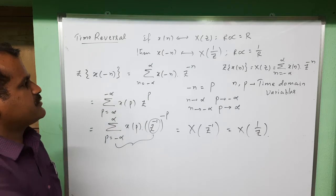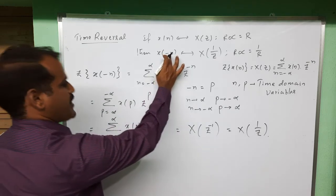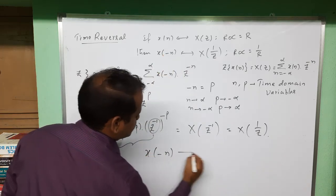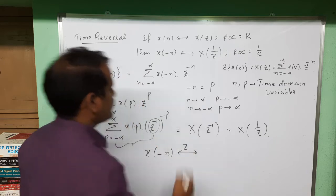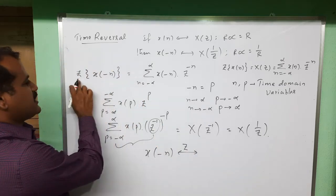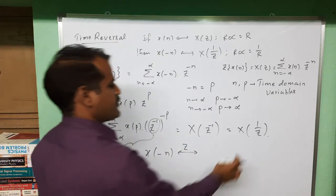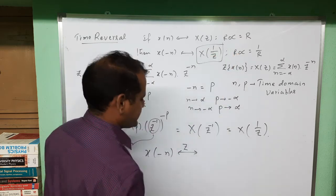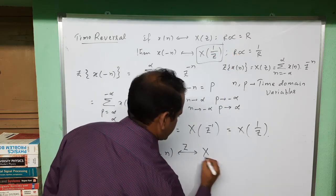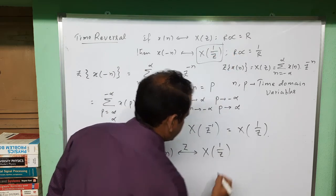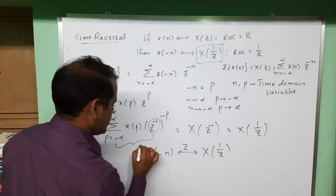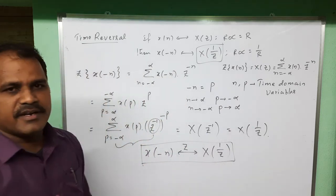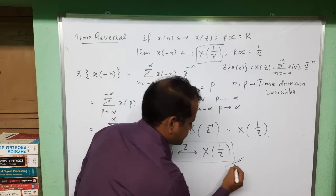So what we considered — the Z-transform of X(-n) — finally gives us the required right-hand side expression X(1/Z). This proves the time reversal property of the Z-transform. Thank you.